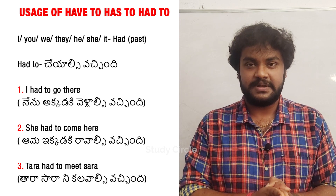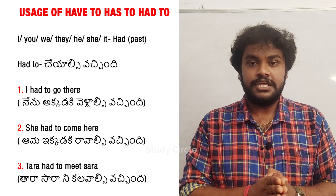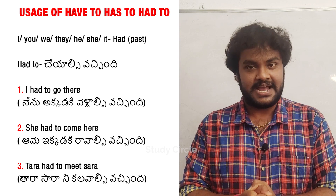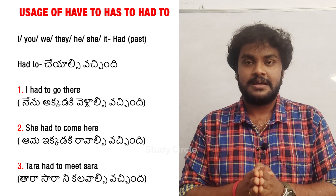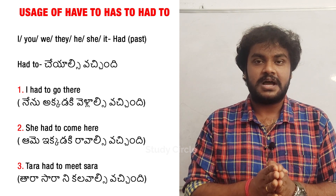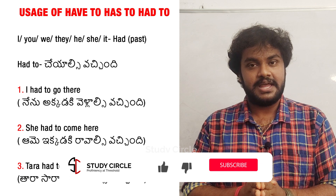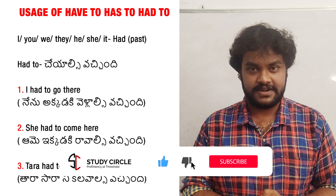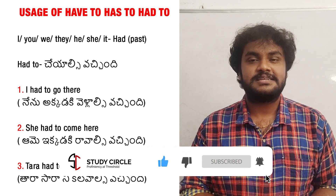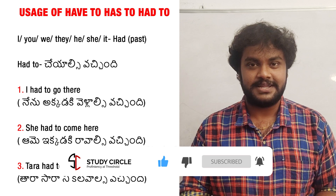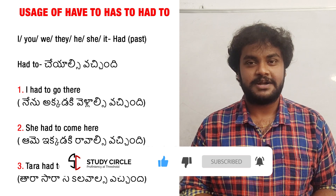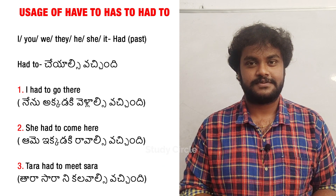Simple trick: I, you, we, they — use 'have to'. He, she, it — use 'has to'. For past tense, use 'had to' for every subject. Ok friends, thanks for watching. Subscribe to this channel for regular updates. Stay home, stay safe.